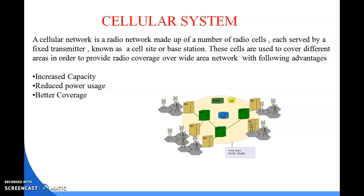In the cellular system, each transmitter — typically called a base station — covers a certain area known as the cell. Cell radius can vary from tens of meters in buildings, hundreds of meters in cities, up to tens of kilometers in the countryside. The shape of cells are never perfect circles or hexagons but depend on the environment — meaning buildings, mountains, valleys, weather conditions, and sometimes even system load.